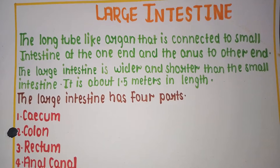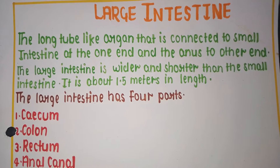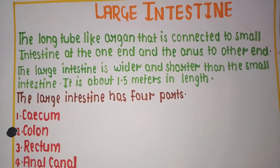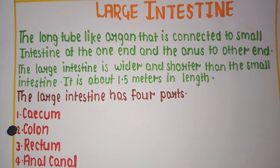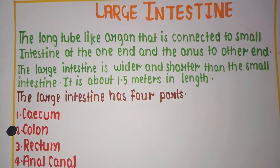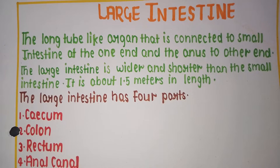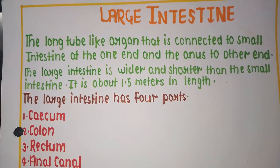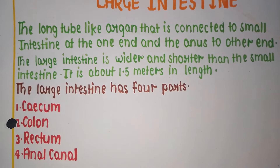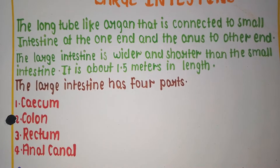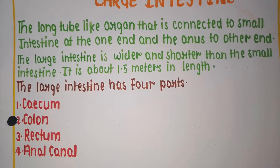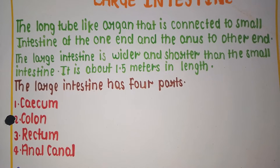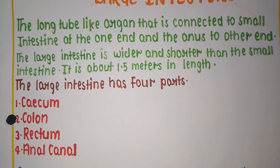The large intestine is a long tube-like lumpy organ that is connected to the small intestine at one end and the anus at the other end. The large intestine is wider and shorter than the small intestine.